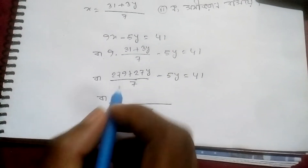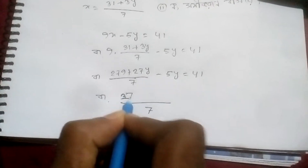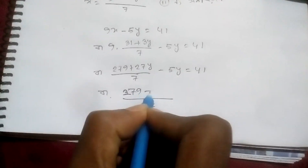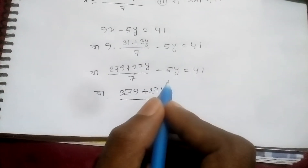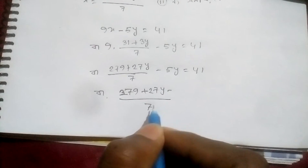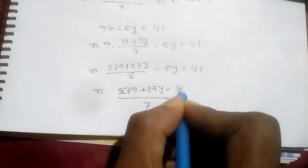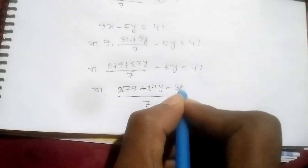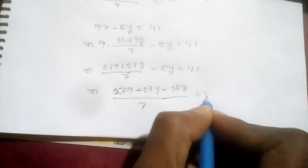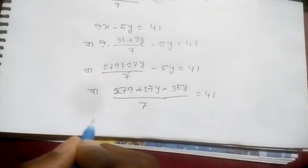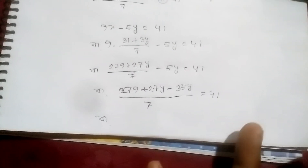7x minus 7y minus. I can see 4x minus, I can see 5x minus 35. 35 is 45. I can see 46 as x.